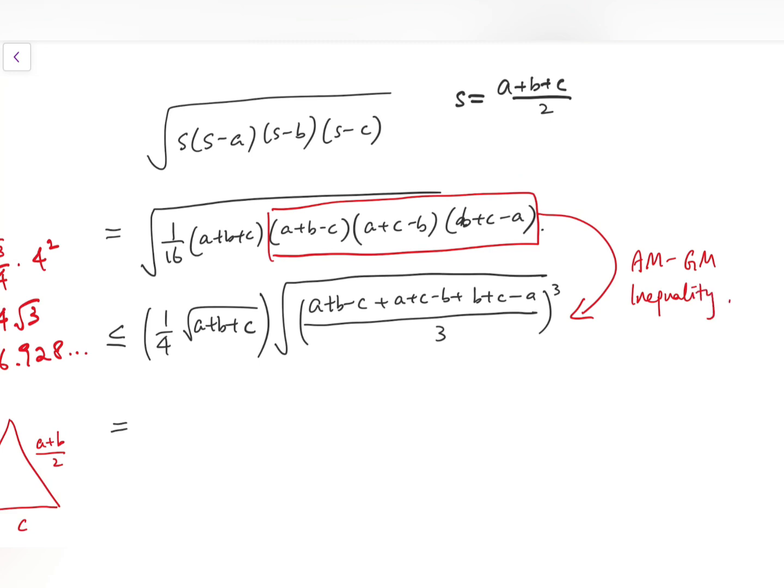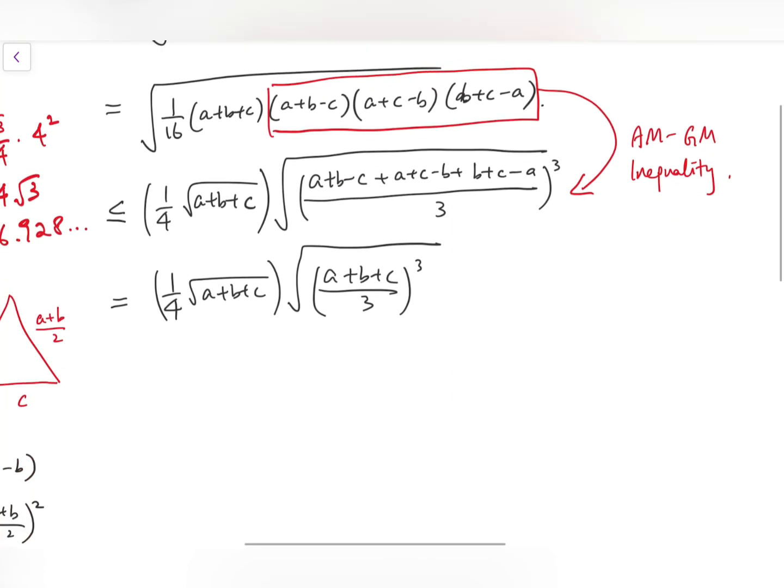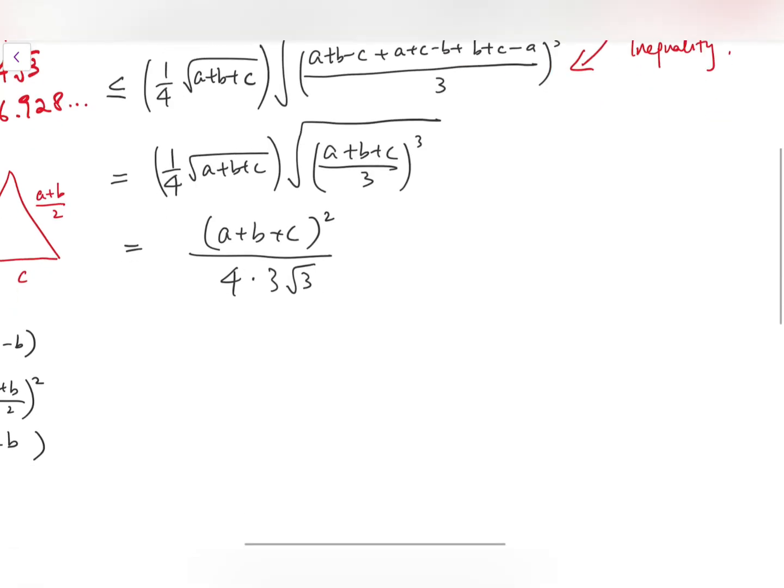Now the magic is, inside the large set, we actually have (A plus B plus C) all divided by 3, all cubed. So putting everything together, we have (A plus B plus C) all squared. We have one-half power in the first bracket, and then three-halves power next to it. And then this square divided by 4 times 3 times root 3. So we have the perimeter squared over 12 root 3.